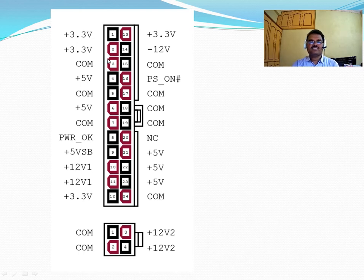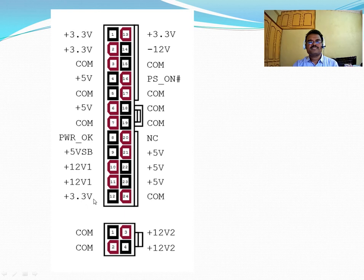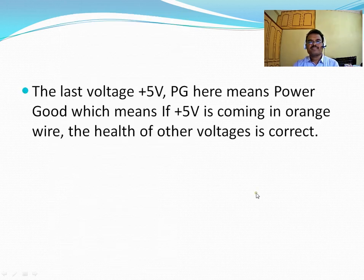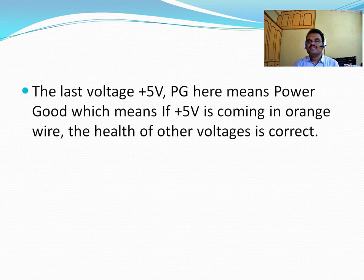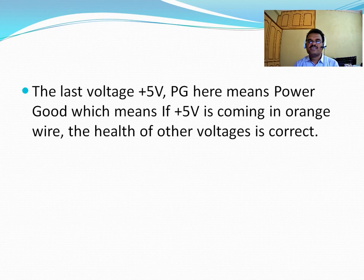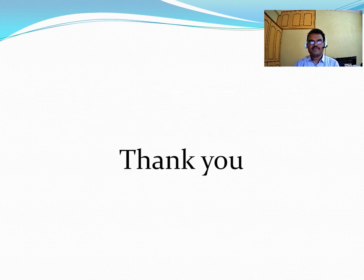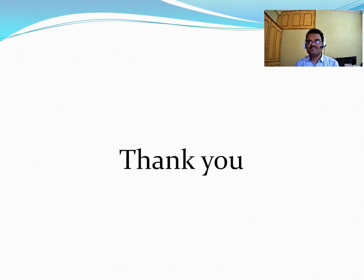Here we can see all connectors' voltage levels — pin numbers 1 to 12 and 13 to 24 with extra signals: plus 3.3V, plus 5V, power OK, 12V, etc. The power good signal is the most important signal coming from SMPS to the motherboard — in the 20 pin or 24 pin connector it ensures that all voltages are correct. If all the voltages are not correct it stops and gives an error. This is all about SMPS, its various connectors, and the voltage levels of all connectors coming from SMPS. Thank you.